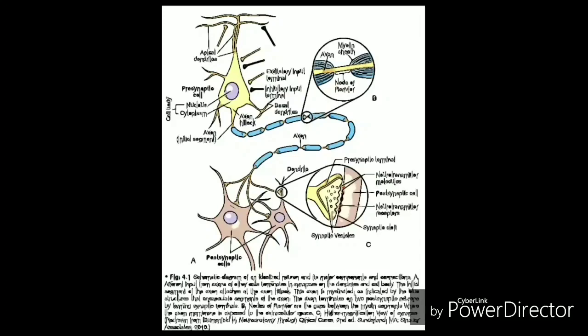Because action potential conduction requires passive and active flow of current, the rate of action potential propagation is determined by both of these phenomena. One way of improving passive current flow is to increase the diameter of an axon, which effectively decreases the internal resistance to passive current flow.